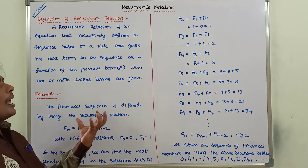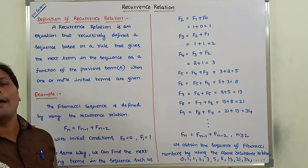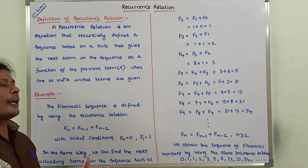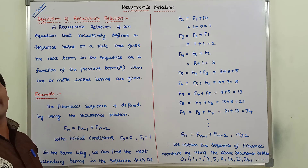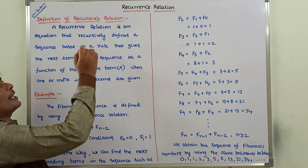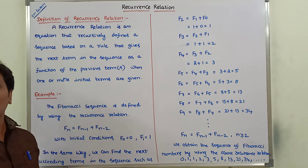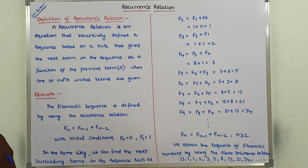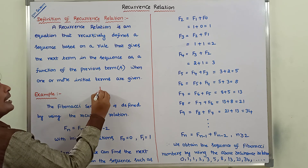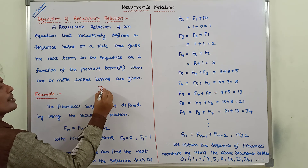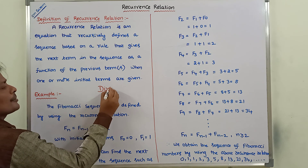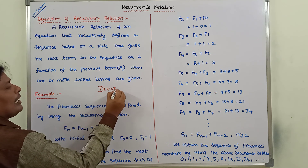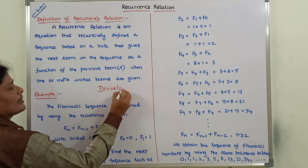So this is the explanation of the definition of recurrence relation with the Fibonacci sequence. A recurrence relation is an equation that defines a sequence recursively based on a rule — the next term in the sequence as a function of the previous terms — when one or more initial conditions are given. Thank you for watching this video. Please subscribe to my channel, Develop Srinivasarav.